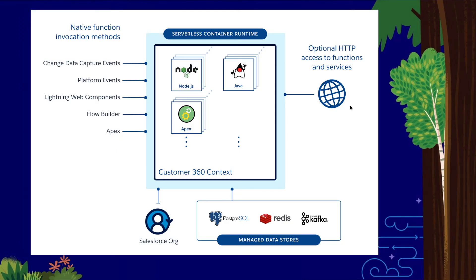The example we just saw is a Node function triggered by a platform event. You can also write your functions in Java or in Apex. These functions can be triggered not just by platform events, but also by CDC events, or directly called by a Lightning Web Component, from within a Flow, or from existing Apex code. Once these functions execute, they run in a serverless container runtime and can seamlessly read or write data from your Salesforce org. At the same time, these functions can also orchestrate with data in standard SQL, Redis, or Kafka data stores.